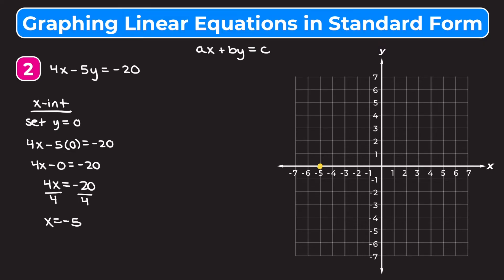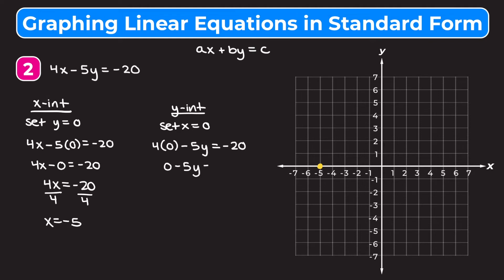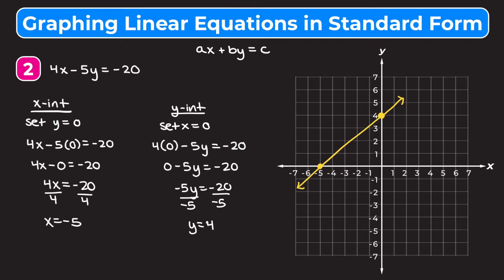Now we find the y intercept. Setting x equal to 0, we have 4 times 0 minus 5y equals negative 20. Since 4 times 0 is 0, we have negative 5y equals negative 20. Dividing both sides by negative 5 gives a y intercept of positive 4. We plot positive 4 on the y axis and then draw a straight line through both points — that's how we graph the line.